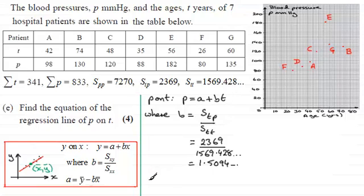So the mean of T, T bar, is equal to the total of all the T's, 341, divided by the number of values we've got, which is 7. Leave that like that because it doesn't work out very cleanly.